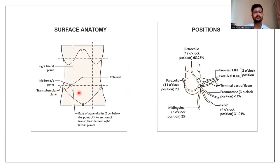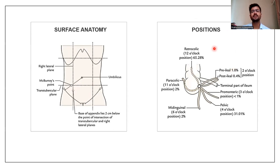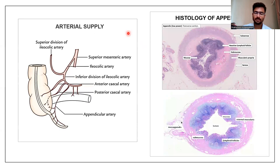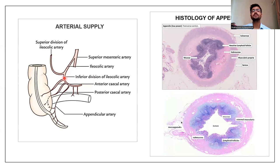The base of the appendix lies 2 cm below the point of intersection of the transtubercular plane and mid-clavicular plane. The most common position of the appendix is retrocecal at 65.28%, followed by pelvic at 31%, then paracolic, mid-inguinal, pre-ileal, and post-ileal positions. The arterial supply is from the appendicular artery, a branch of the inferior division of the ileocolic artery, which is a branch of the superior mesenteric artery. Histologically, the appendix consists of four layers: mucosa, submucosa, muscularis, and serosa.